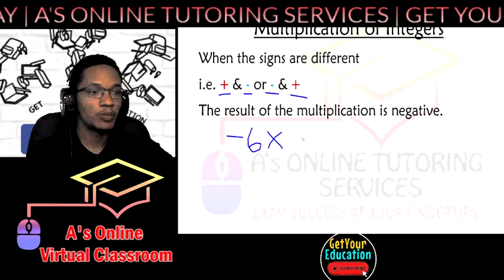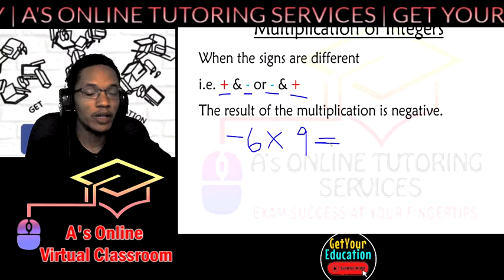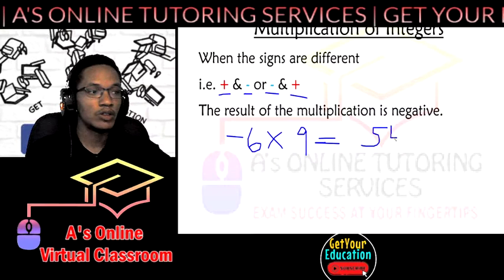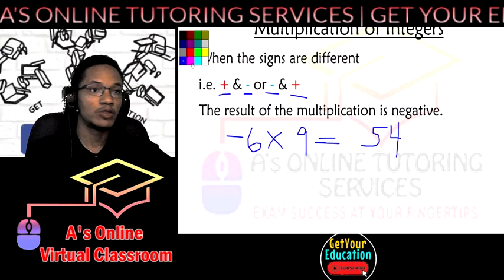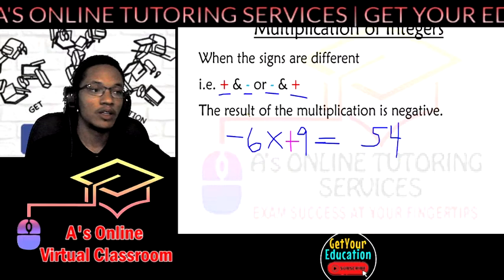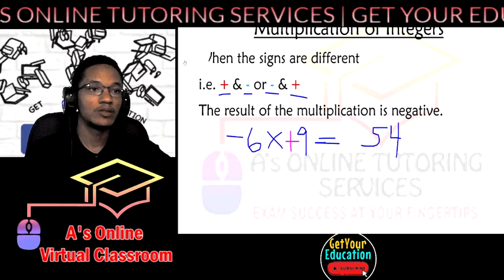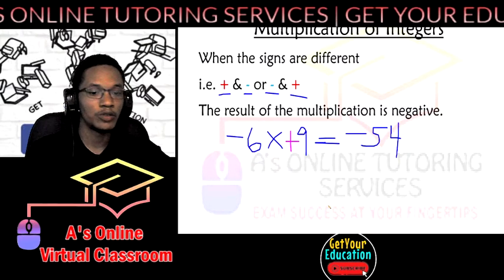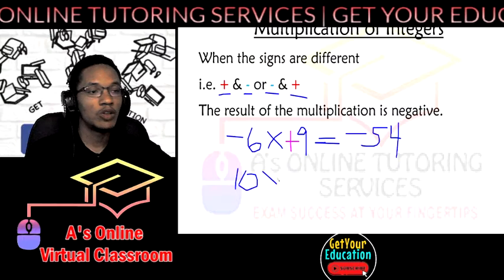Let's say we have negative six times positive nine. Multiply the numbers, six times nine is 54, and because the signs are different, one is negative one is positive, then our answer would have a negative sign. So it's negative 54.